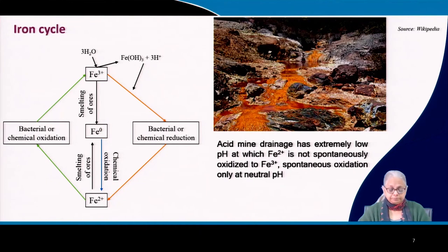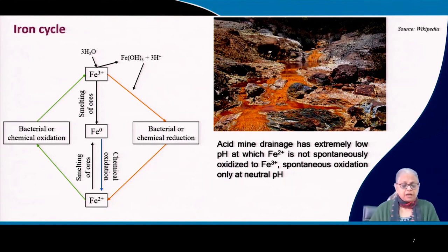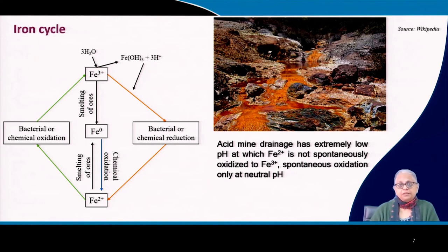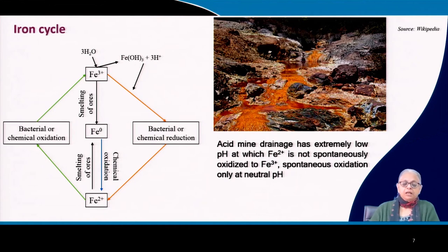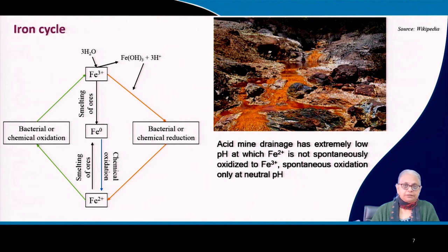Let us now come to another element: iron. Iron is not a macronutrient — it is a micronutrient, but it is an essential micronutrient. Iron exists in three major forms. The most oxidized form is Fe3+, which is ferric iron. The next reduced form is Fe2+, which is ferrous iron, and Fe0, which is the elemental form. The elemental form is found only by anthropogenic means — you have to smelt the ores to create elemental iron. What is found in nature is ferric and ferrous iron. Ferric and ferrous iron can be either reduced or oxidized — it can be done bacterially or chemically.